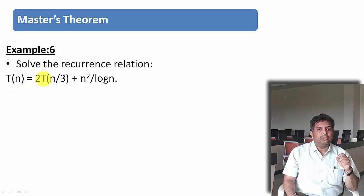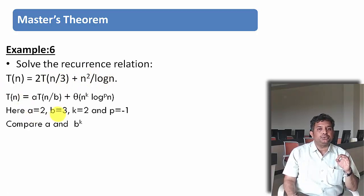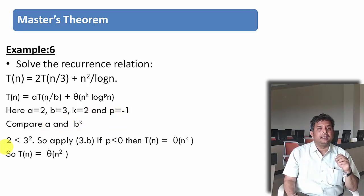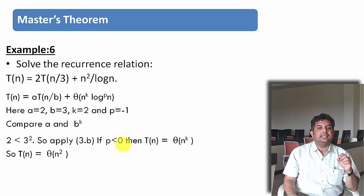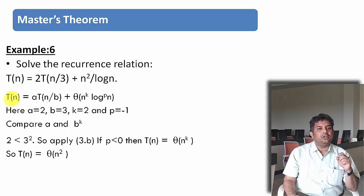The last problem: T(n) = 2T(n/3) + n²/log n. Here a = 2, b = 3, k = 2, and p = −1. Comparing a and b^k: 2 is less than 3² = 9. Since p = −1, which is less than 0, we apply condition 3b: the complexity is Θ(n^k). With k = 2, the complexity of this recurrence relation is Θ(n²). These are the problems we solved to find time complexity using Master's Theorem.